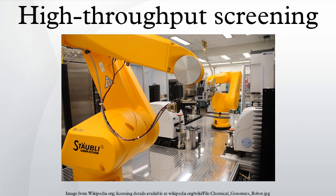Assay plate preparation: The key labware or testing vessel of HTS is the micro-titer plate, a small container, usually disposable and made of plastic, that features a grid of small, open divots called wells. Modern microplates for HTS have either 384, 1536, or 3456 wells. These are all multiples of 96, reflecting the original 96-well microplate with spaced wells of 8 x 12, 9 mm.